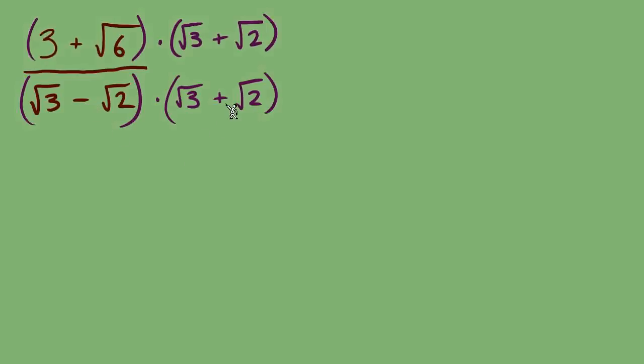We will always do the same thing to the numerator as we do to the denominator, so we make a choice based upon what we see in the denominator. We never make a choice based on the numerator. Now two terms by two terms in both numerator and denominator, so we've got two FOIL multiplications that we need to do.